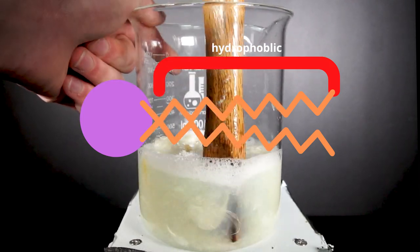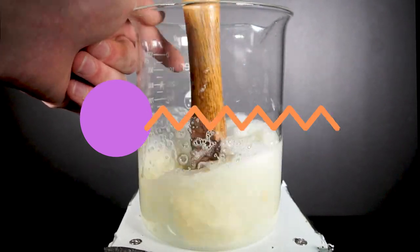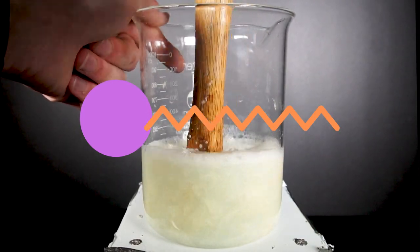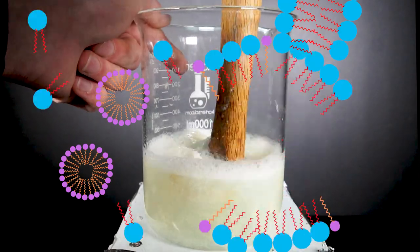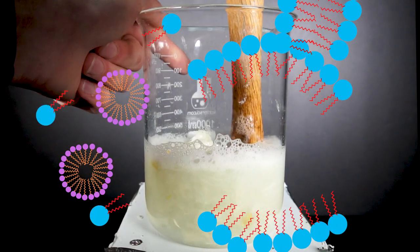Soap is very similar to the phospholipids that make up the cell membrane, except that soap only has one hydrophobic tail instead of two. The soap is able to pull the phospholipids into its own group, ultimately destroying the cell membranes.